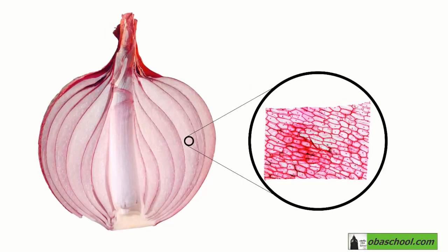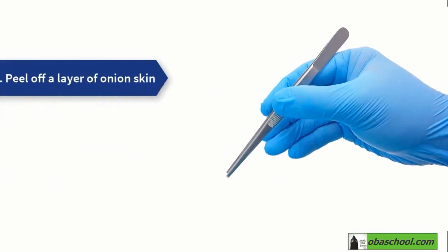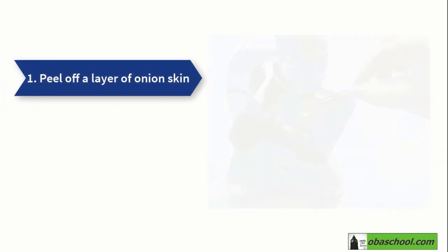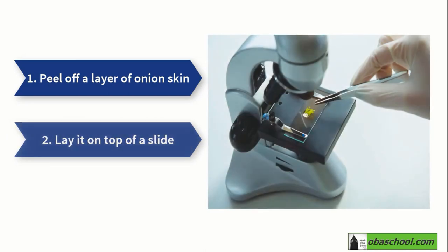To view plant cells, for instance onion cells, we use tweezers to peel a layer of the onion skin and lay it on top of a slide.